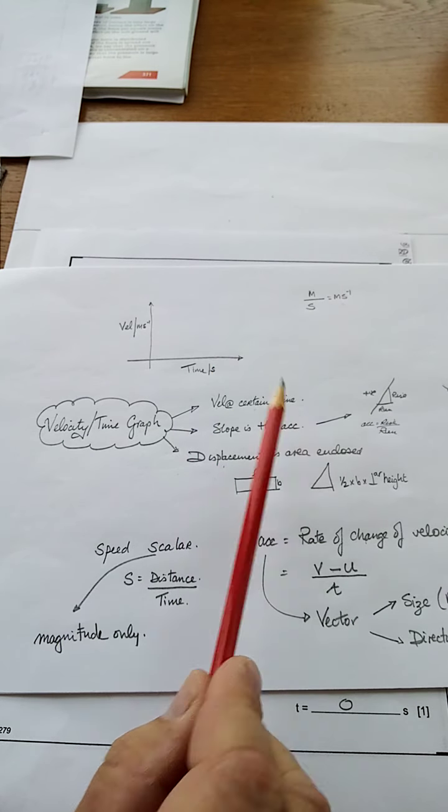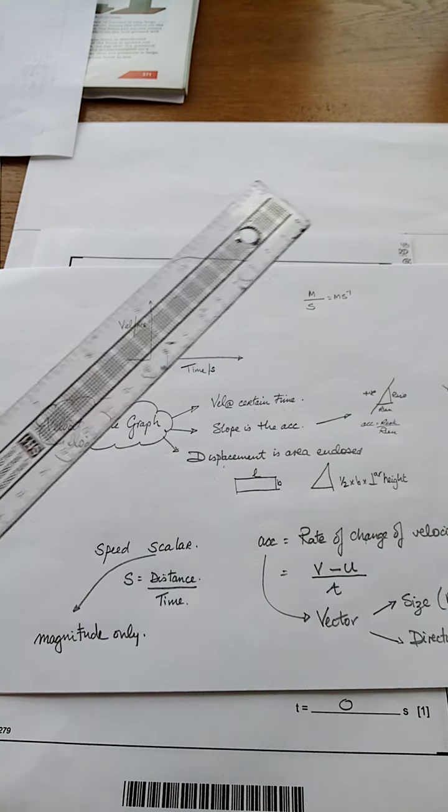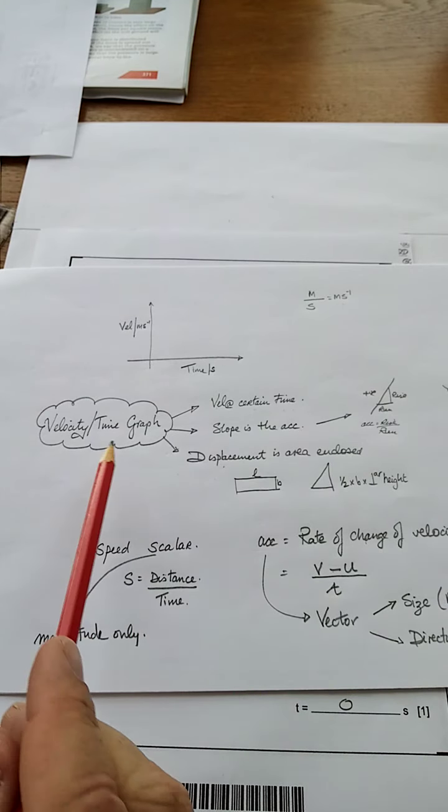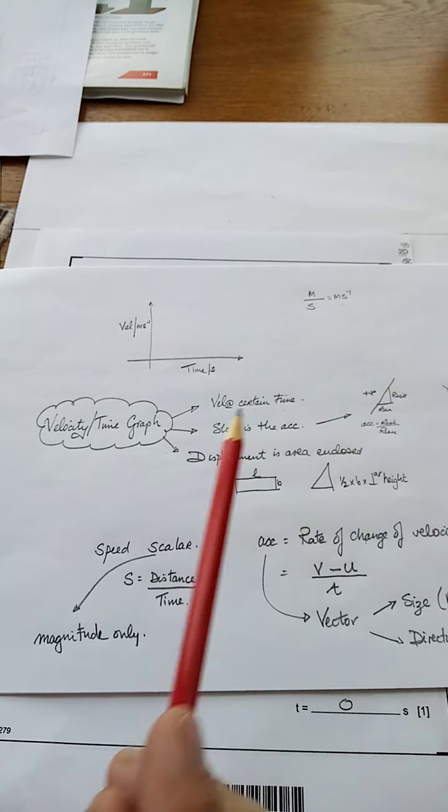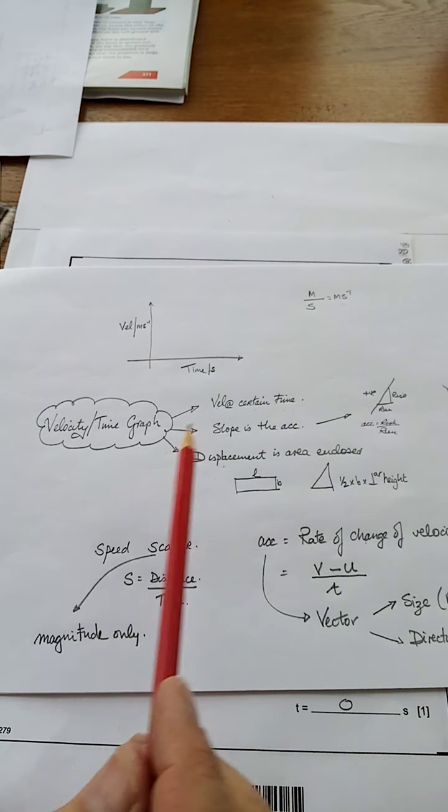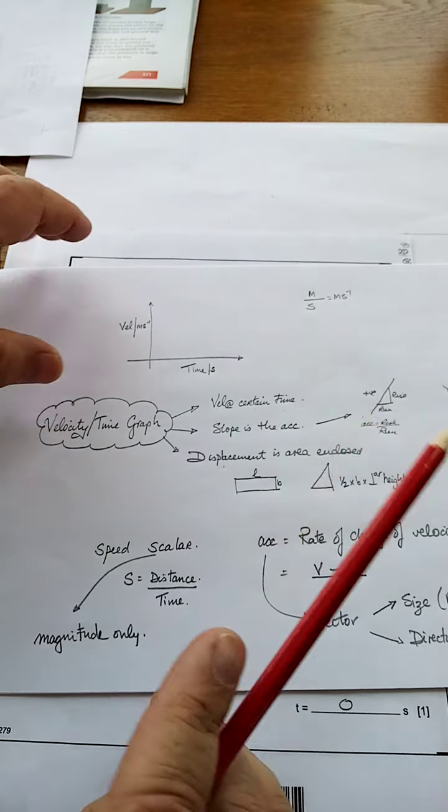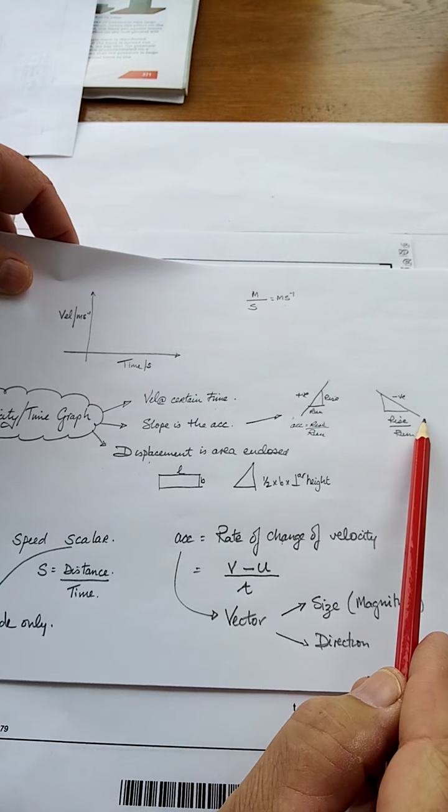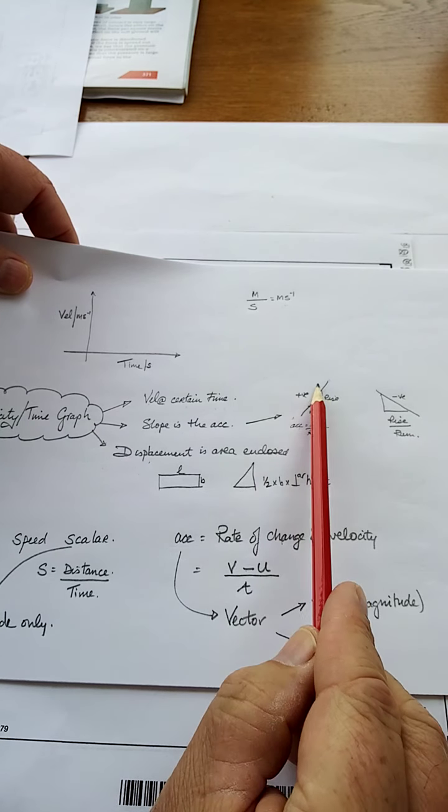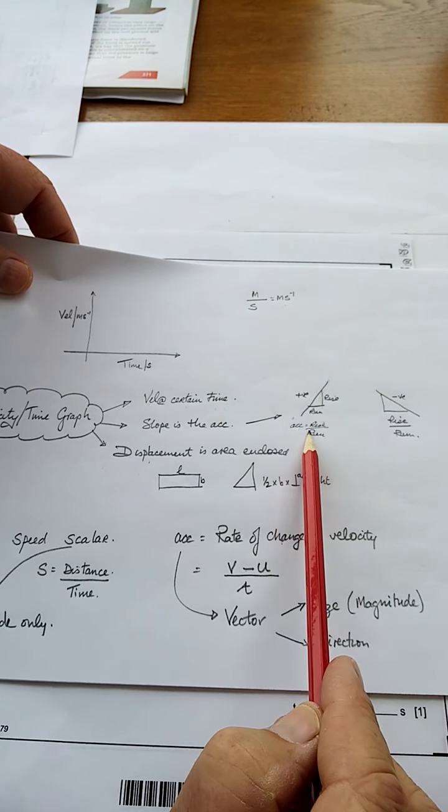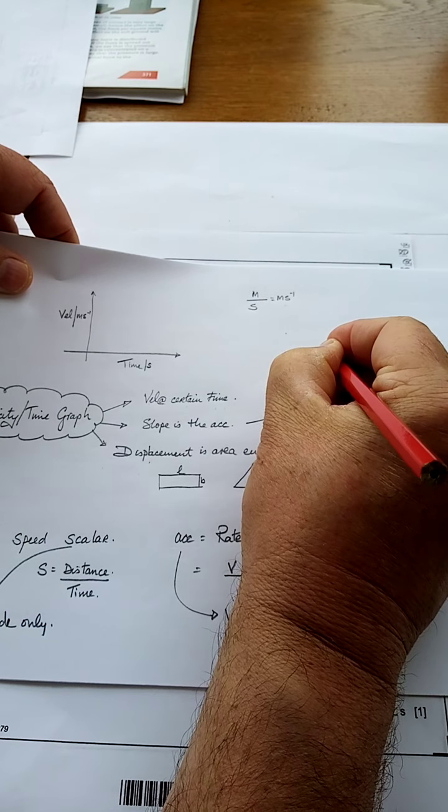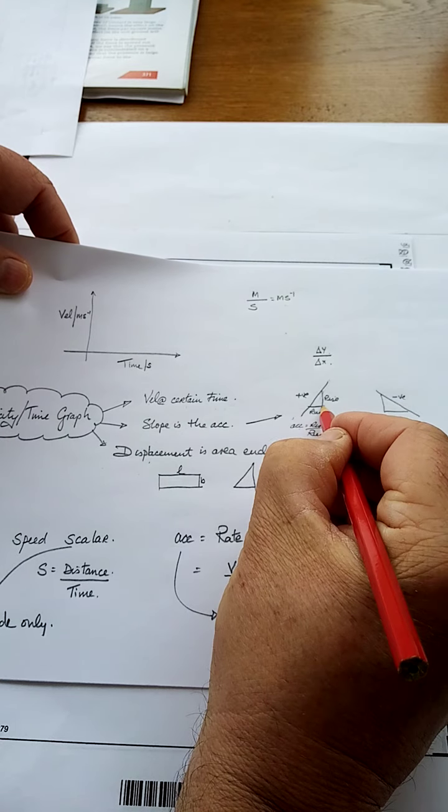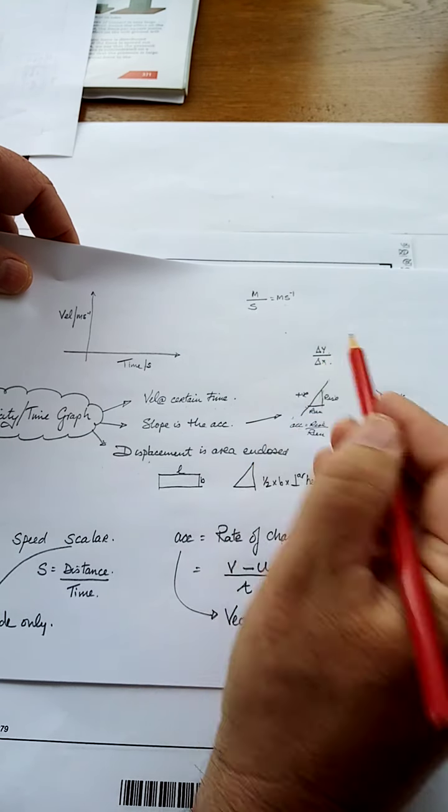It tells you the velocity at a certain time. You read that off the graph using our dear old trusted ruler. The second thing you can tell from the velocity time graph, the slope is the acceleration. Now there are two types of slopes. There's a positive slope and then the other one is the negative slope. They're both calculated by the rise. The rise is your y over your run. Sometimes it's known as delta y over delta x. Rise is changing y over run, changing x.